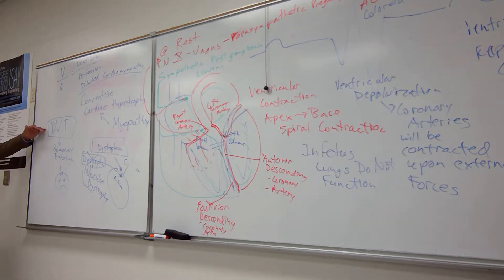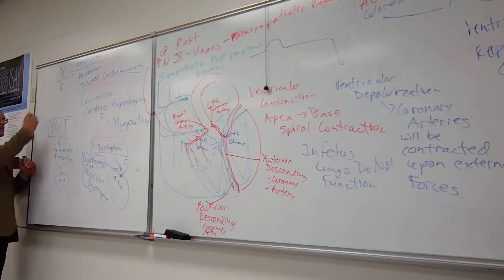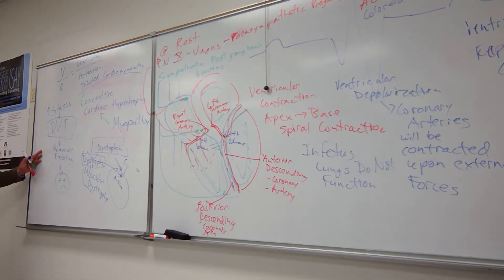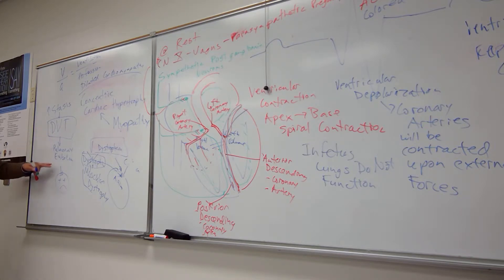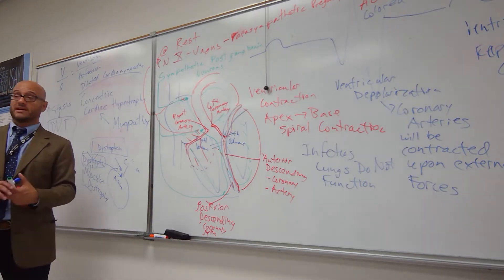DVT is about stasis in blood vessels. Stasis increases the risk for DVT, and if a deep vein thrombus breaks off and travels to the lungs, it causes a pulmonary embolism that can lead to death. There are many diseases — including acid-base imbalances — that impact the cardiovascular system.